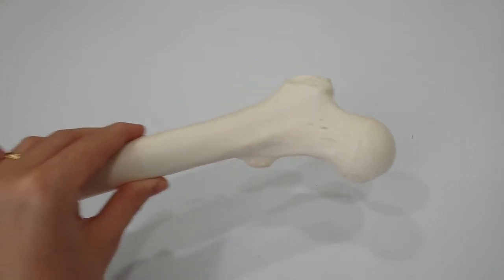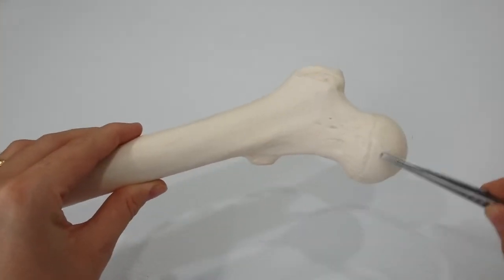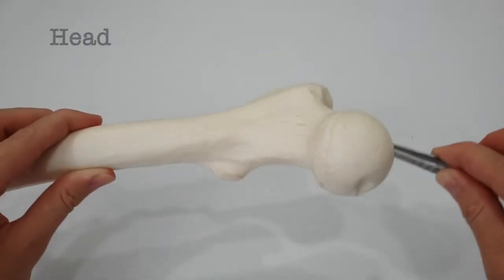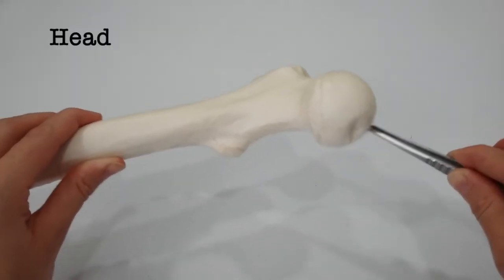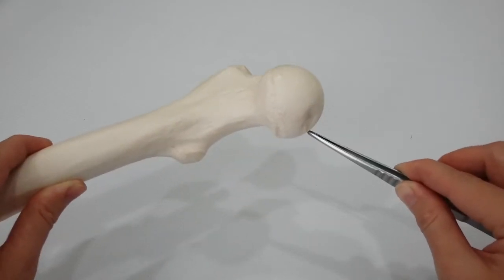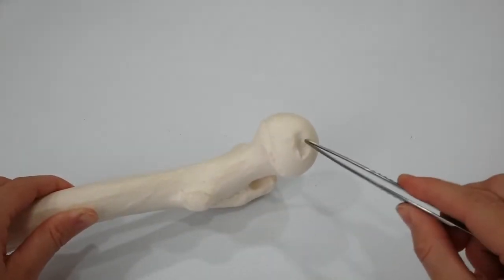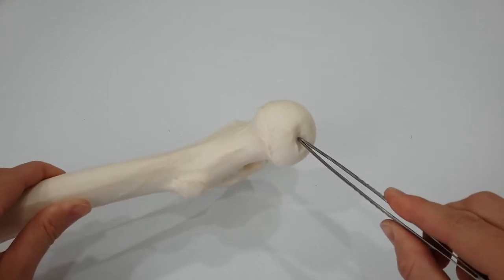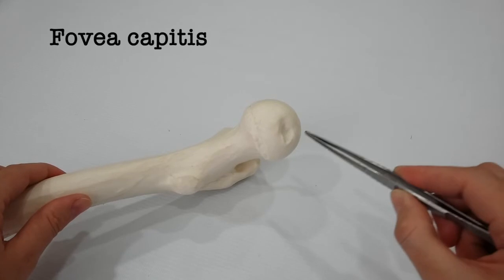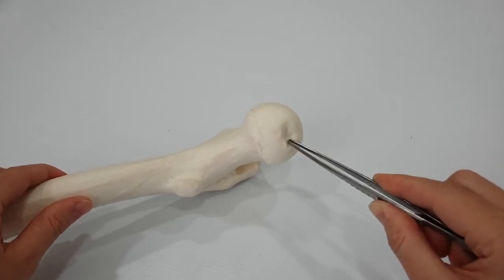The upper end of the femur has a head, a neck, and greater and lesser trochanters. The head forms about two-thirds of a sphere and articulates with the acetabulum of the hip bone to form the hip joint. In the center of the head is a small depression called the fovea capitis for the attachment of the ligament of the head.